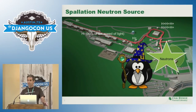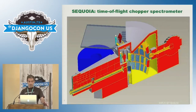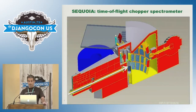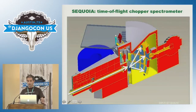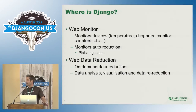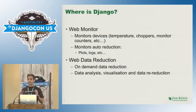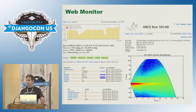Those neutrons are then directed to instruments. We have around 12 to 15 instruments and they all have Django somehow. We use Django to monitor everything — all the process. We use a lot of JavaScript, fancy plots, fancy stuff.